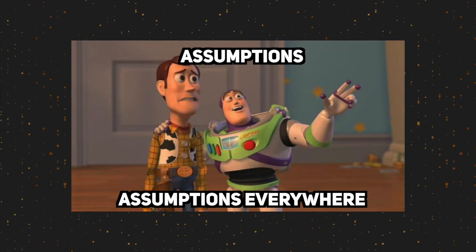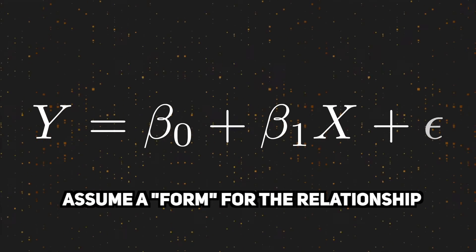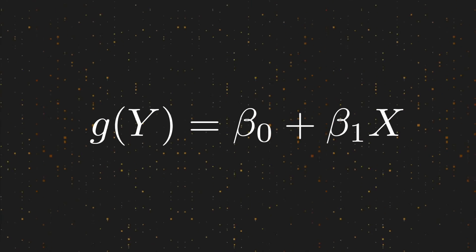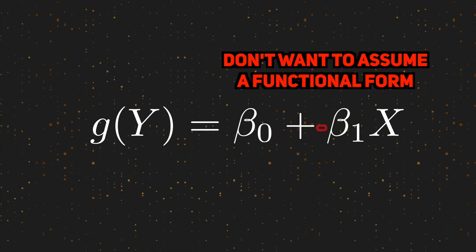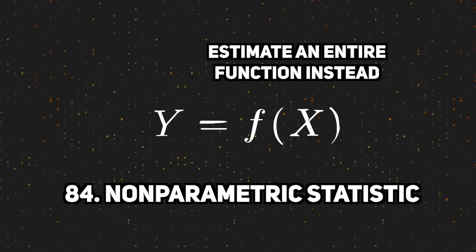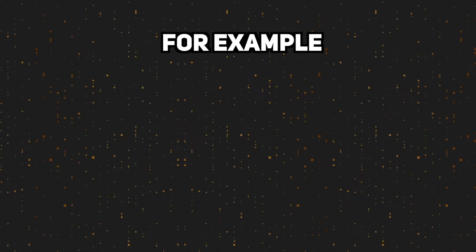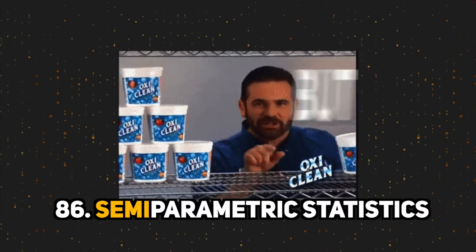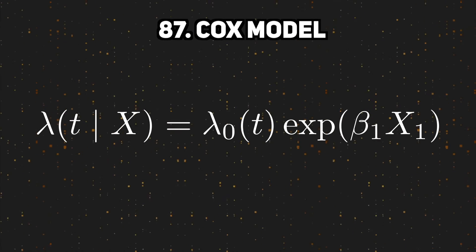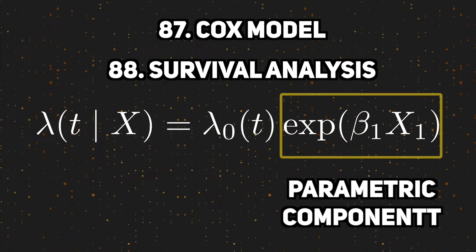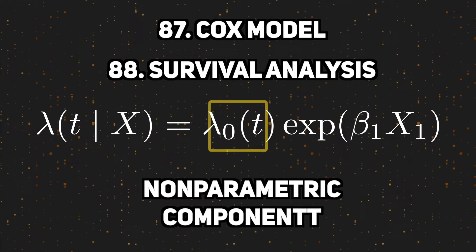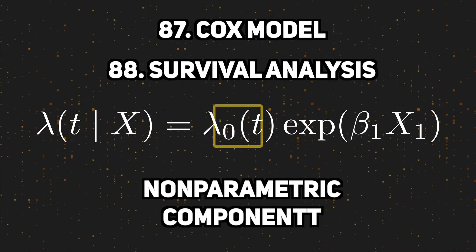In statistics, we must always keep our assumptions in mind. Models are assumptions themselves, and the models discussed so far are examples of parametric statistics. If we don't want to use a parametric model, we can use a non-parametric model instead — for example, the Mann-Whitney test is a non-parametric form of the two-sample t-test. Then there's also semi-parametric statistics. The most famous semi-parametric model is the Cox model used in survival analysis. One part of the model is parametric, describing how survival changes with the treatment, while the non-parametric part is an entire function called the hazard function.